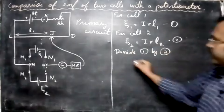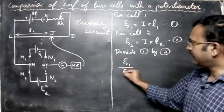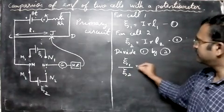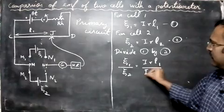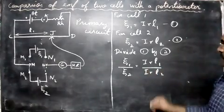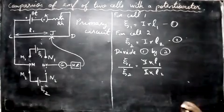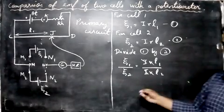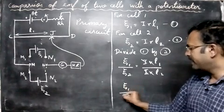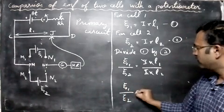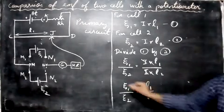I divide this - the first EMF E1 by the second EMF E2 is equal to IR L1 by IR L2. So what happens is I cancels, R cancels - remember R means resistance per unit length. So finally we get this equation to be: the EMF of the first cell by the EMF of the second cell is equal to L1 by L2. This is the final equation.